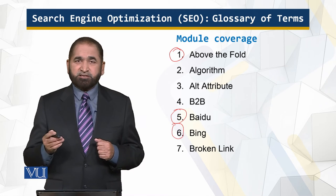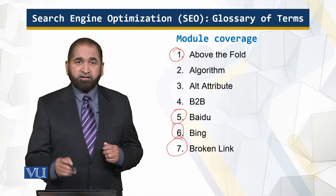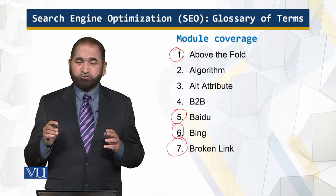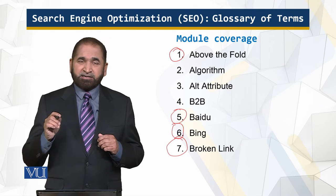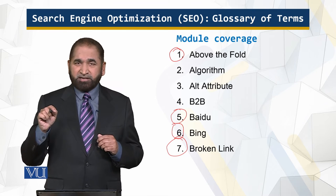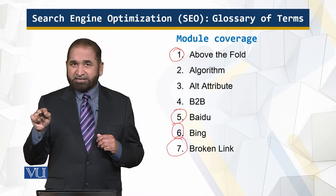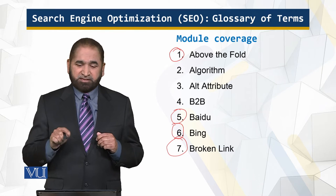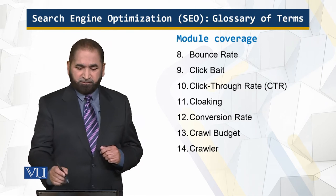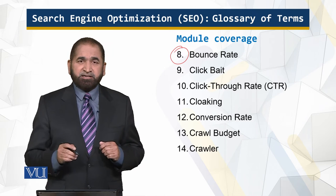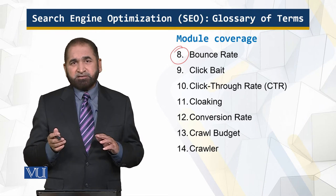A broken link is a link which generates a 404 error — the link is there but when you click on it, it is not connected to any page. Bounce rate is a percentage measuring how many people land on your page and then leave without further investigating.